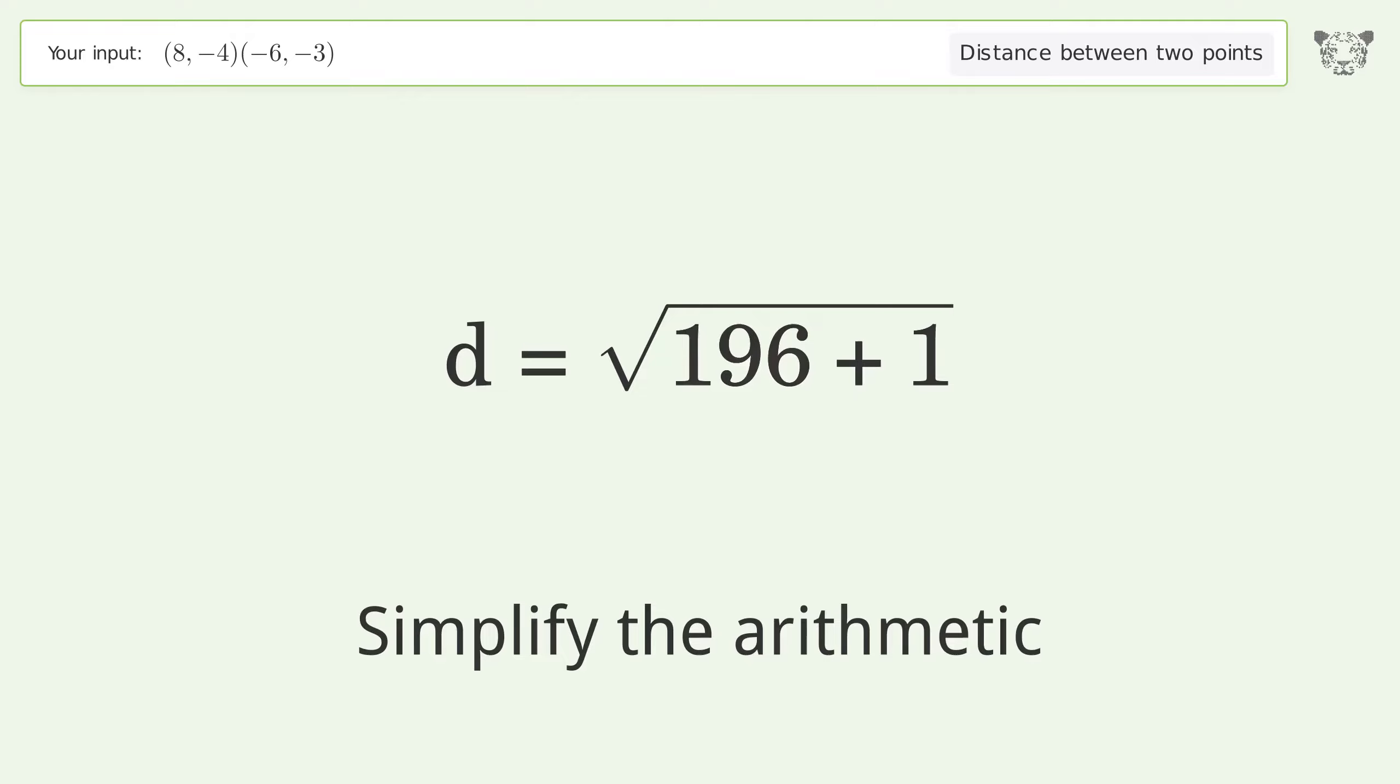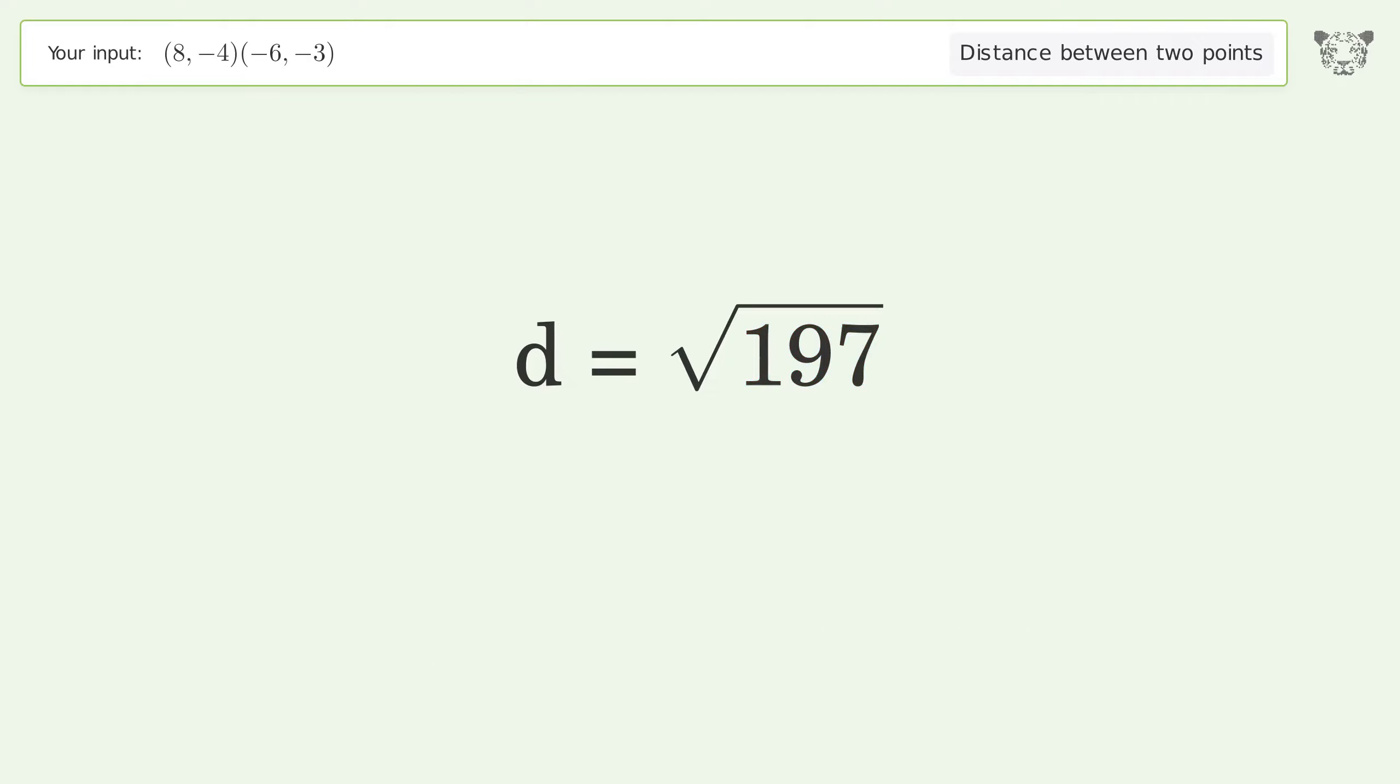Simplify the arithmetic. And so the distance between the two points is the square root of 197 or 14.036.